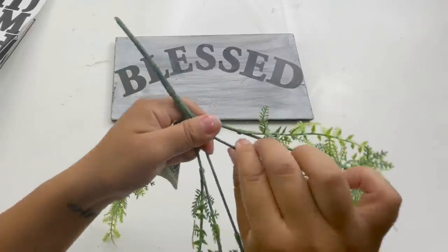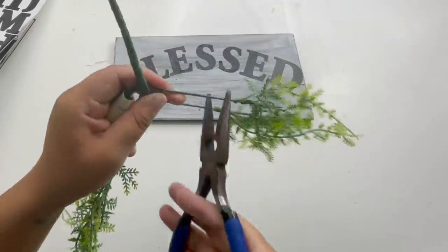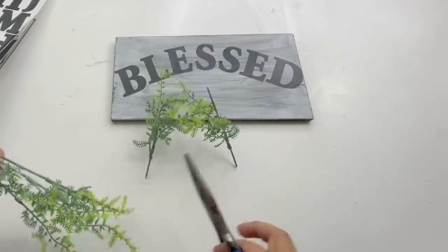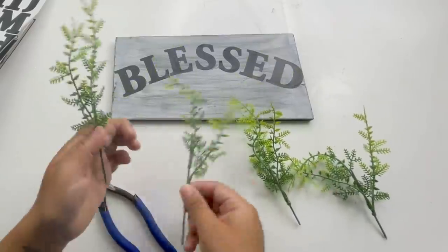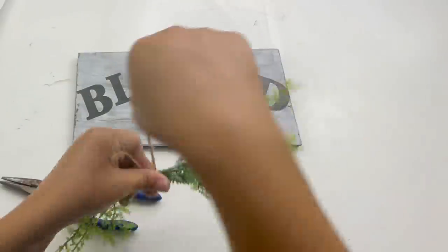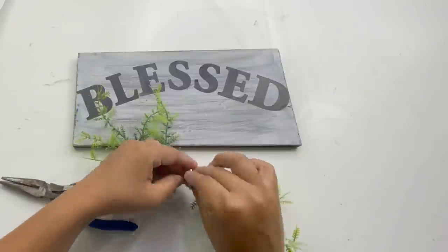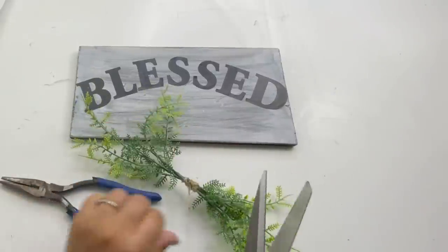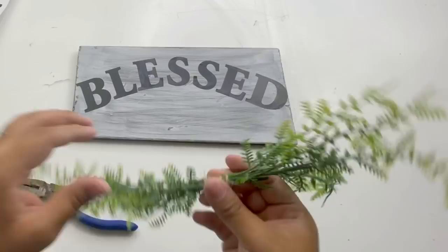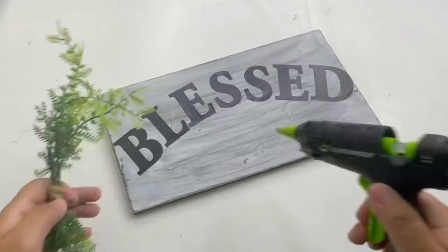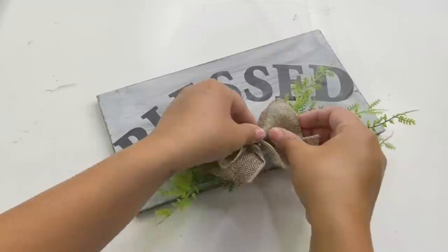To finish this off I will be using some of the Dollar Tree greenery. I cut some stems off and tie them together in the center. I glue this underneath the bless sign. Now to cover the center I made a bow using some of the Dollar Tree burlap ribbon. And that is it guys, that is it for this beautiful blessed sign.